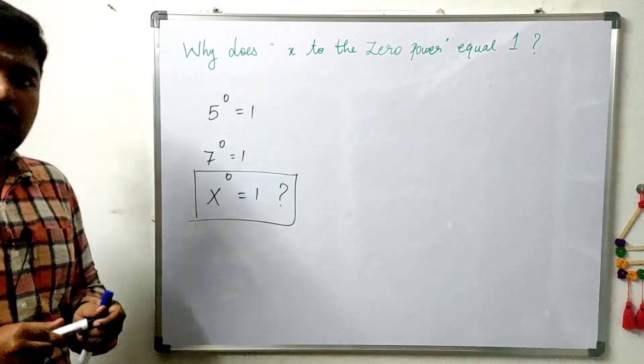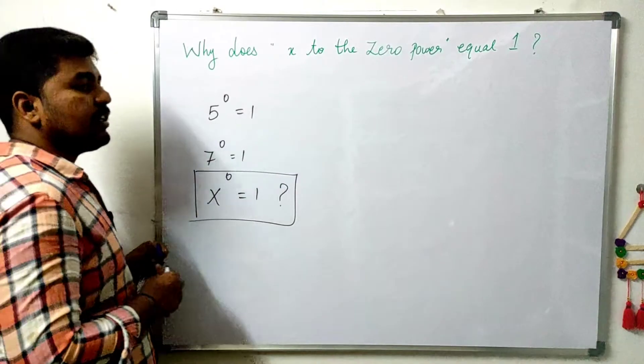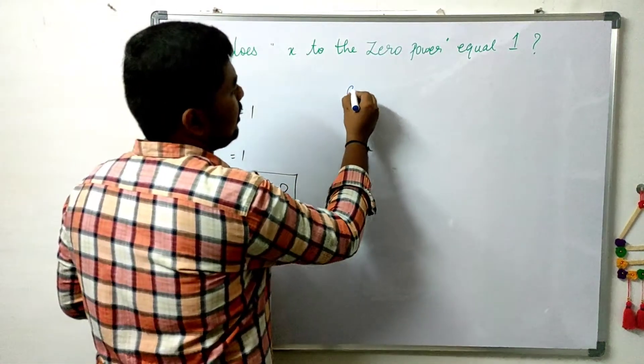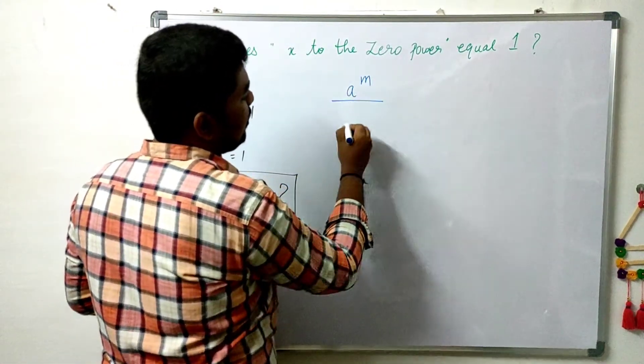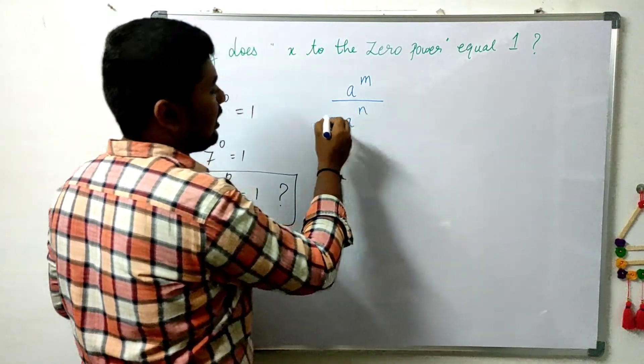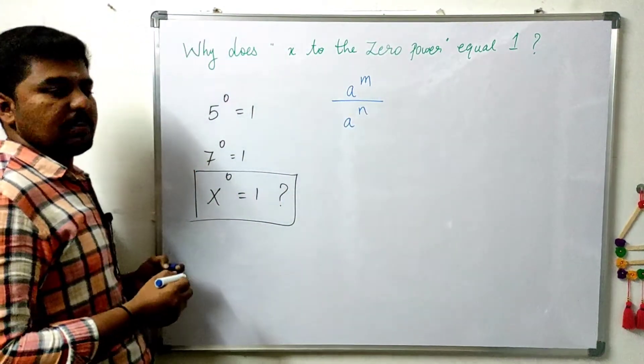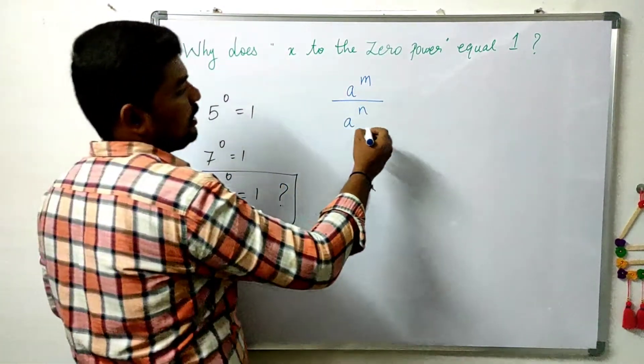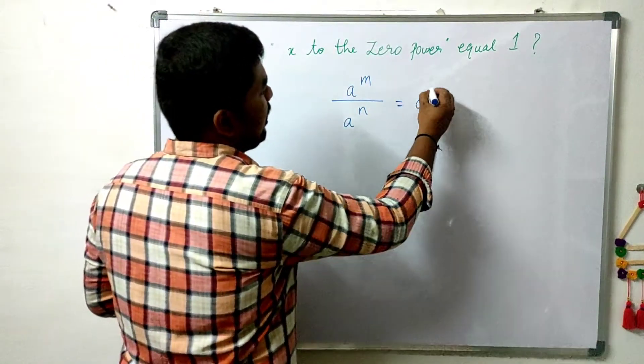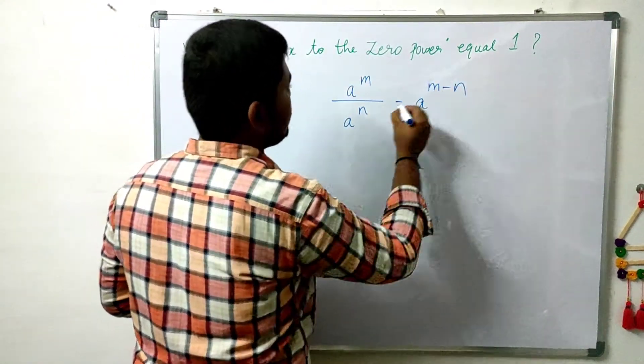We already know the law of exponents. That means a power m divided by a power n. Here, a is the base and m and n are powers. So this equals a power m minus n.